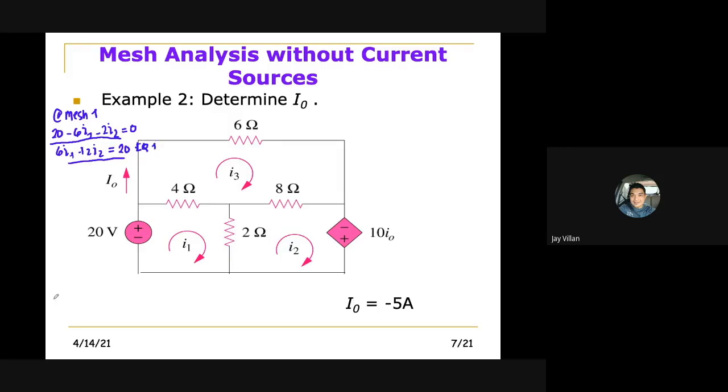So for equation 2, at mesh 2, at I2, we have here. We start at 2 to make it easier. And to keep it simple, you just add 2 plus 8, so minus 10I2.